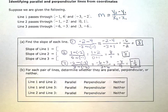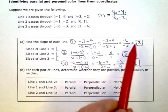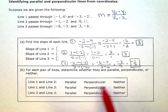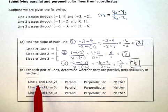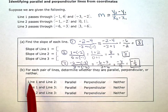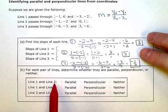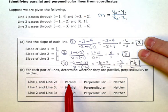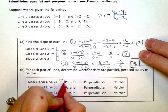So there's my three slopes: 3, 3, and negative 1 third. Now I'm going to compare the slopes to determine if the lines are parallel, perpendicular, or neither. For line 1 and line 2, if I look at these two slopes, those slopes are equal. Parallel lines have equal slopes, so those two are parallel.